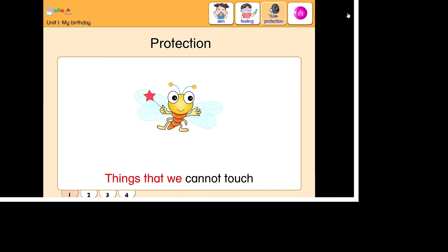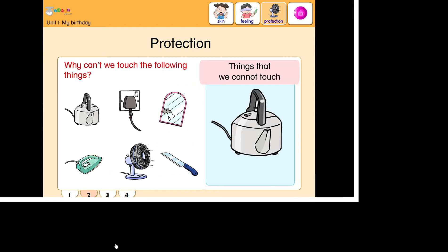Things that we cannot touch. Why can't we touch the following things? Because the electric kettle, when it's boiling, it's very hot.